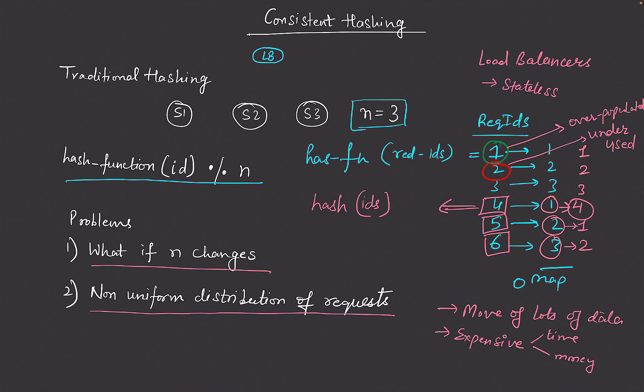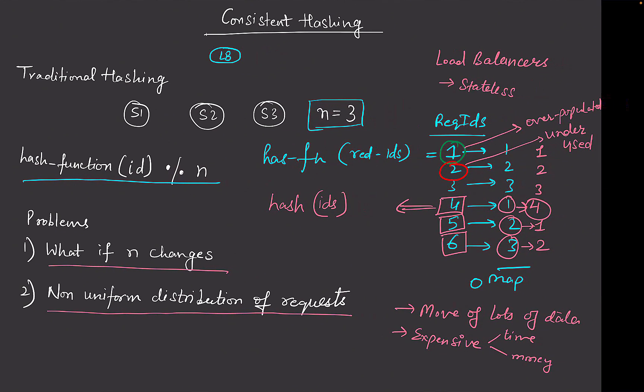So the first drawback is that we have to move a lot of data — expensive in time and money, mainly due to downtime. The second drawback is that even without data movement, the distribution may not be uniform. That's why we normally don't use traditional hashing; we use a different form called consistent hashing.